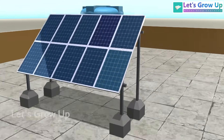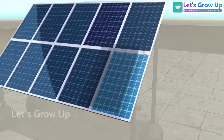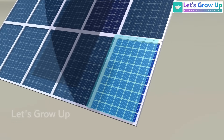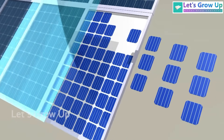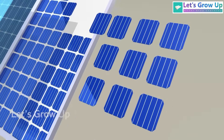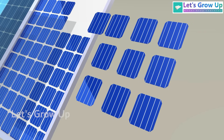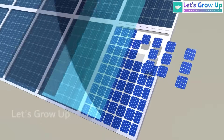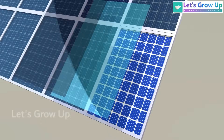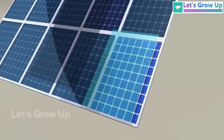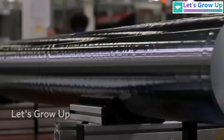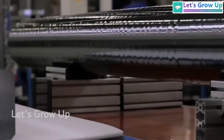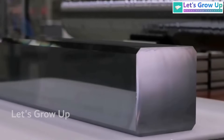If you observe a solar panel, you will notice it's composed of various layers and contains numerous solar cells. When these cells are arranged, they usually form a specific pattern. Cells are typically constructed using semiconductor materials such as silicon.